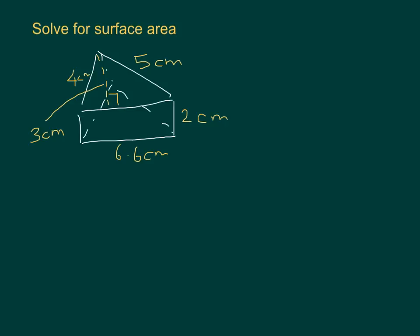Now I have a question — solve for the surface area. I have a shape with all the measurements required. I can see again I have two triangles and three rectangles. When you look at that you can't tell right away whether they're all the same size, but you'll be able to see as you go through it. Go ahead and pause the video now, try it yourself, then come back and check if you got it right.